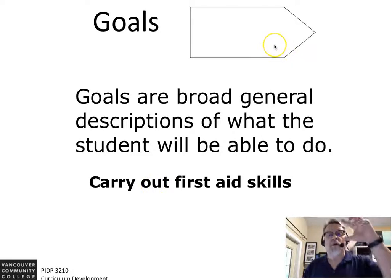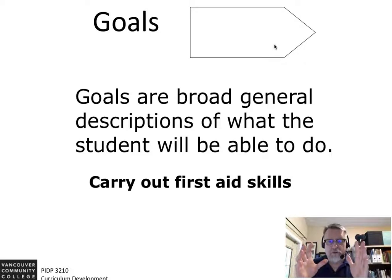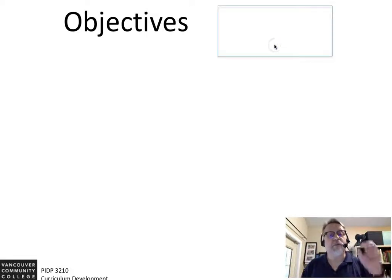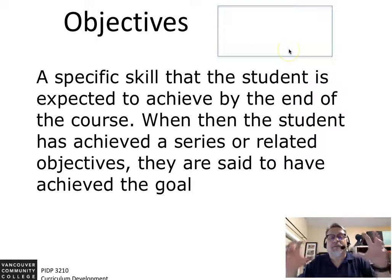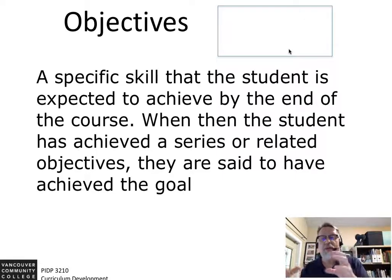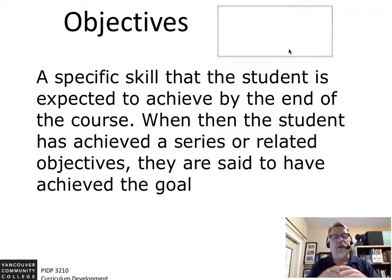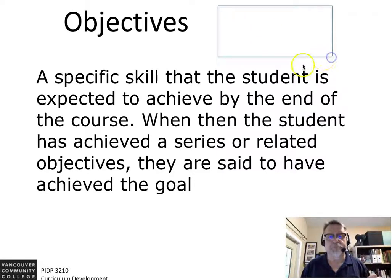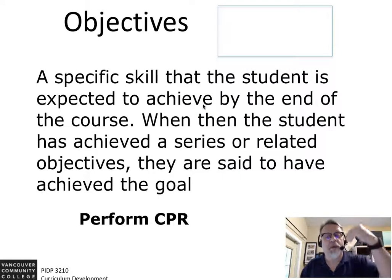The goals are the key broad general descriptions that the objectives lead up to. The objectives are always in the square — the objective is the specific skill the student will achieve by the end of the course, and it's a series of these objectives that will lead up to the achieved goal. Generally, the objectives fit into the goal; the goal is a broader context or topic. For example, 'perform CPR' would be an objective within the goal of first aid.